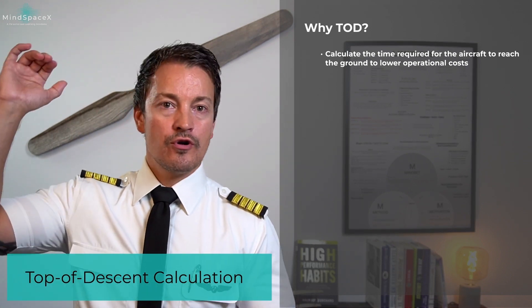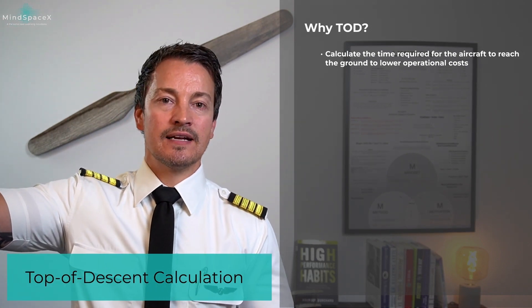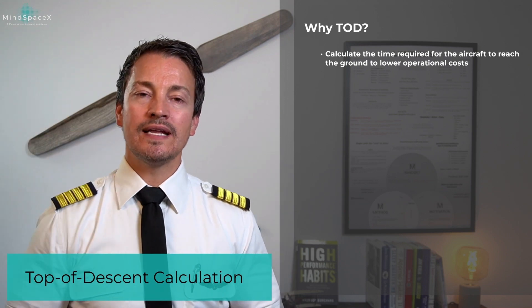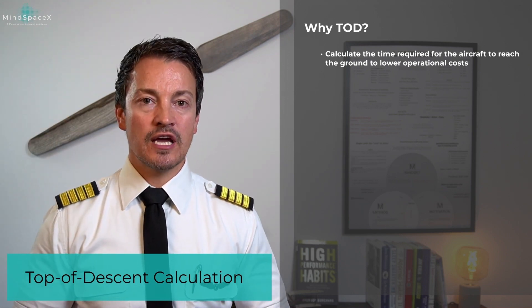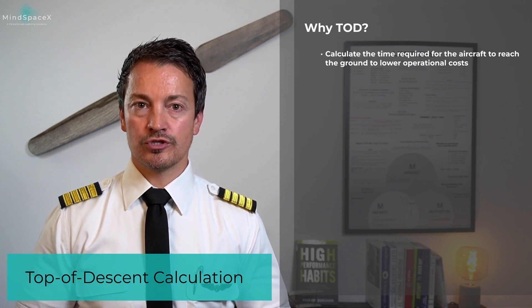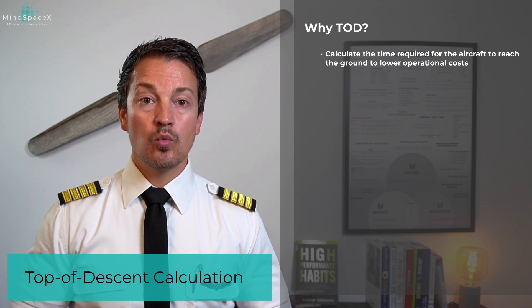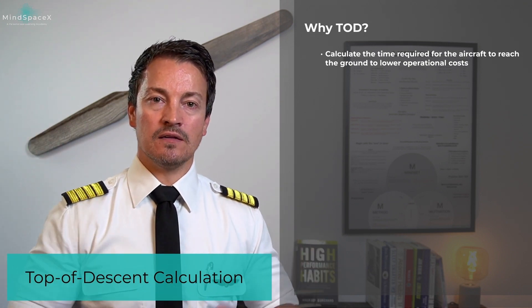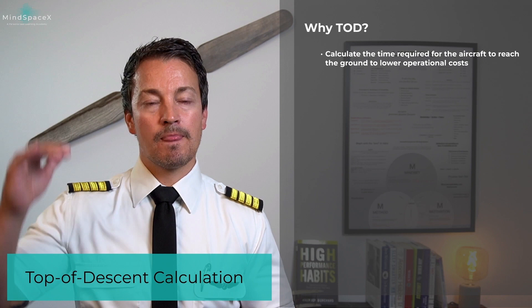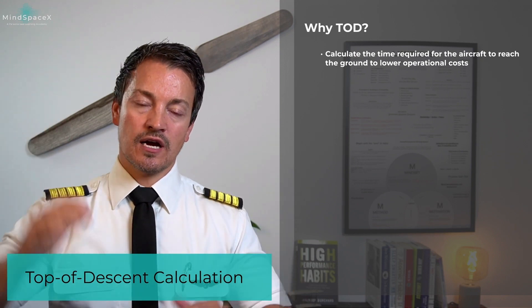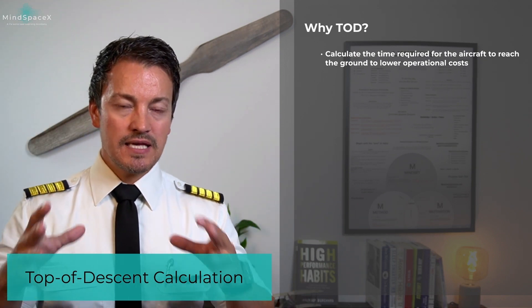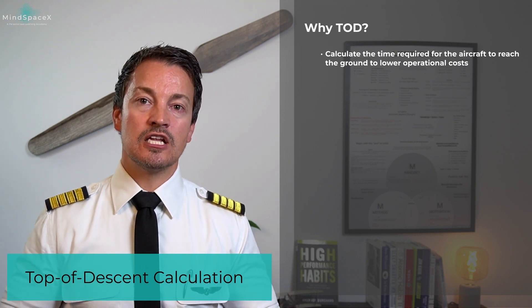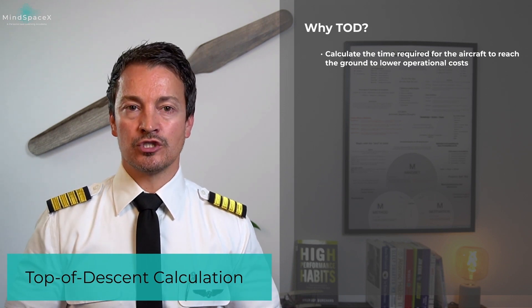We want to fly from 38,000 feet at top of descent and assume a 3-degree glide path all the way down until we're ready to configure the aircraft for a straight-in approach. During the descent, we want to keep the engines in idle. If we can keep the engines in idle from top of descent until we start configuring the aircraft, then we have obtained the lowest possible operational cost.